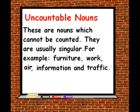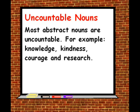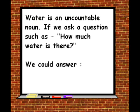Now, let's look at uncountable nouns. These are nouns which cannot be counted. They are usually singular. For example, furniture, work, air, information and traffic. Most abstract nouns are uncountable. For example, knowledge, kindness, courage and research.